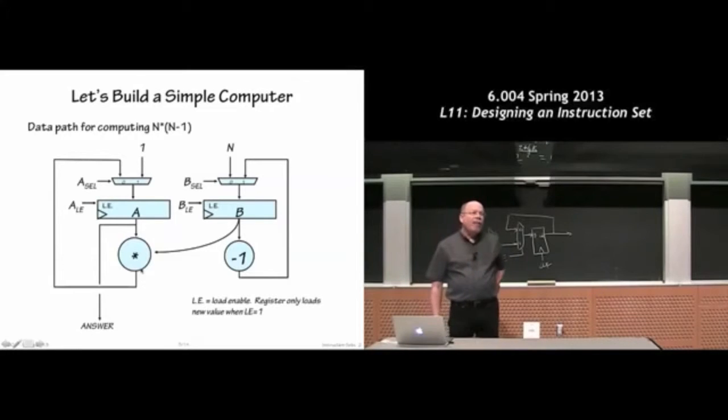This is what's called a data path because it doesn't really tell you much about what order things happen in, what the sequencing of operations is. This picture is really just telling you what's possible. And you can see that there are four control signals that select the value to be loaded into the B register and whether it loads or not. Then over here we have signals that select the value for the A register and whether it gets loaded or not.